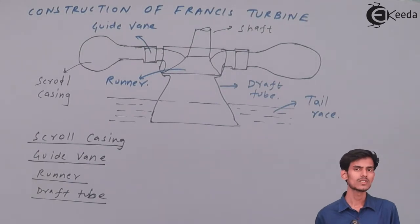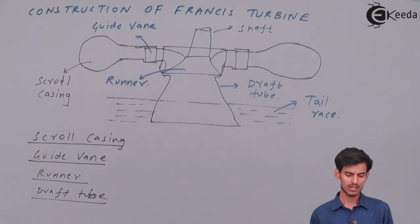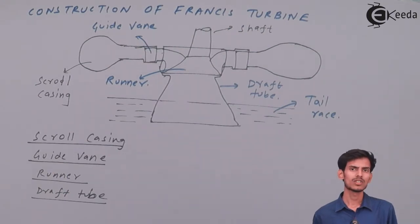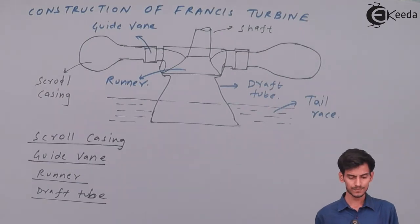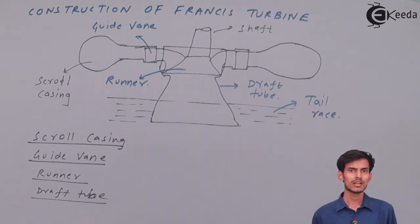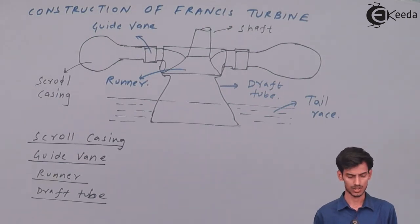After water moves out of the runner, it passes through the draft tube — a divergent tube in which pressure energy increases, thereby avoiding cavitation. Finally, water enters the tail race. That was all about the constructional features of the Francis turbine. Next, we will be looking at the derivations for hydraulic efficiency, mechanical efficiency, and work done.